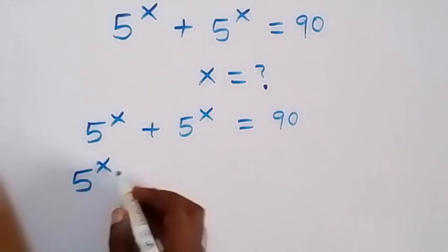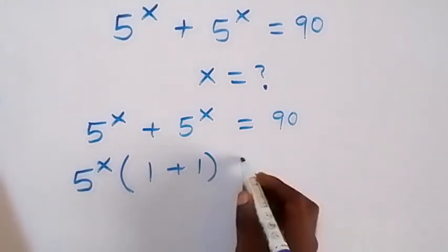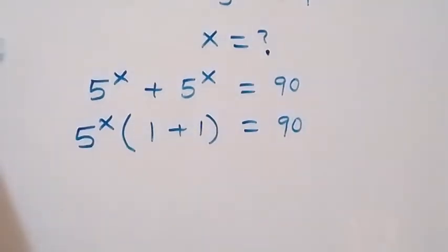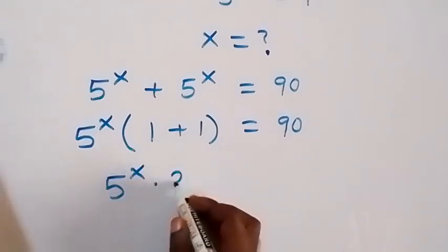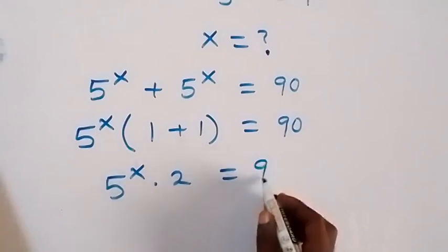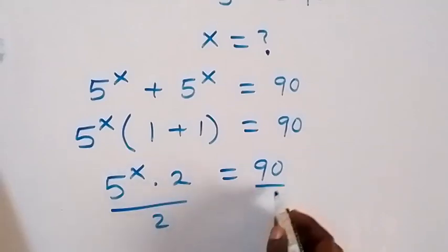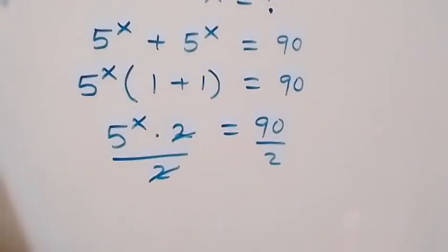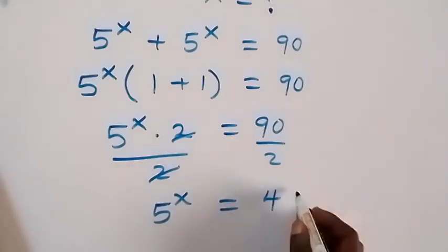We factor out 5 raised to power x into brackets: 5^x times (1 plus 1) equals 90. Here 1 plus 1 is 2, so we have 5^x times 2 equals 90. Divide both sides by 2, and we have 5 raised to power x equals 90 over 2, which is 45.